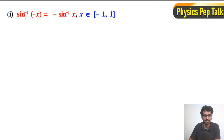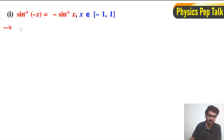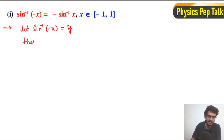First, I will consider sin inverse of minus x is equal to y. Then this can be written as minus x is equal to sin of y — I have operated sin on both sides.